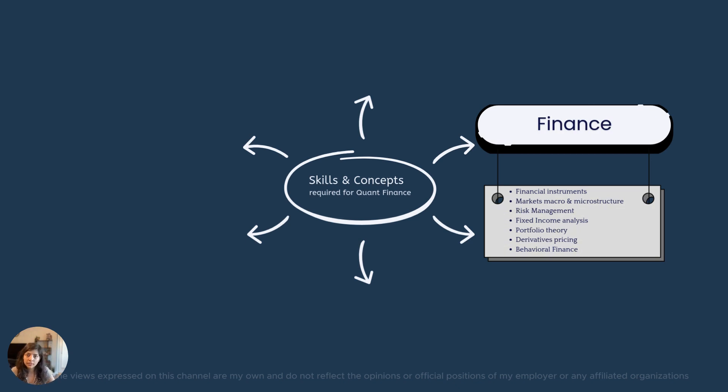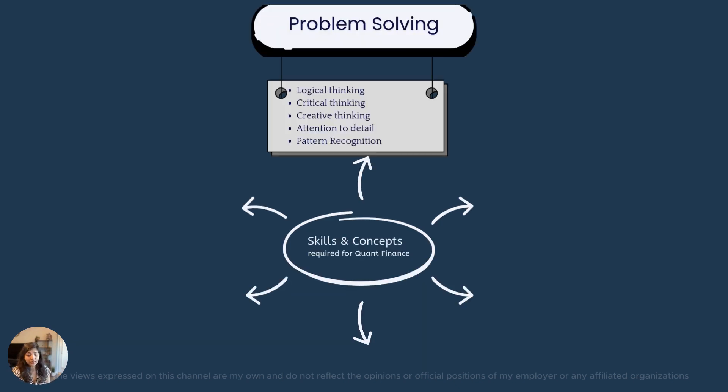Problem solving has a lot of different skills within itself. For example, logical thinking—the ability to approach problems systematically, identifying patterns and drawing connections within the data. All of these skills are very useful in solving brain teaser questions and real-life problems within the quant world. For example, breaking down a puzzle or brain teaser question into smaller steps and then using deductive reasoning.